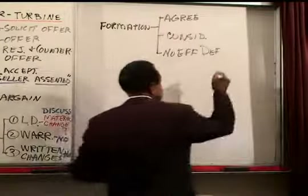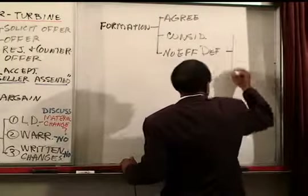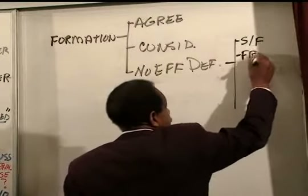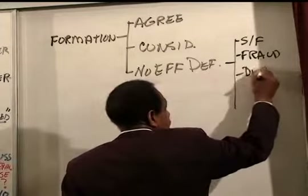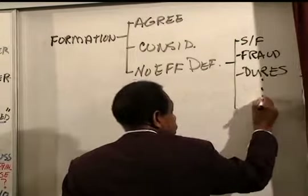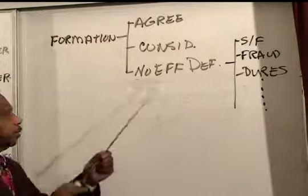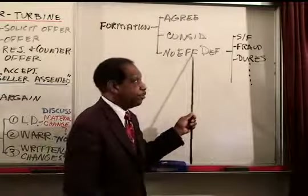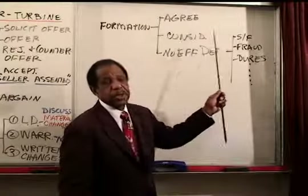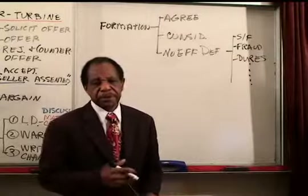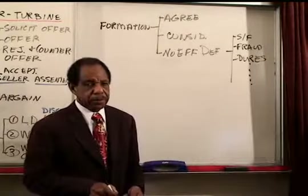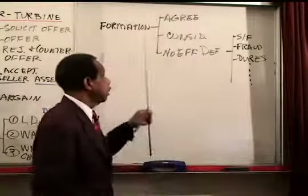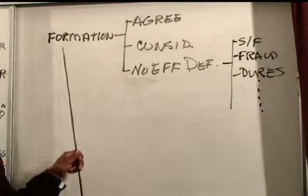Consideration requires that this is part of a bargain, and here the bargain is bolts for money, so the consideration requirement is satisfied. As to defenses, the only possible defense to the formation of this contract is statute of frauds. According to the facts, the contract was in writing. Therefore, the statute of frauds has been satisfied. As a result, Motors has established that there was a contract between Motors and Jones.